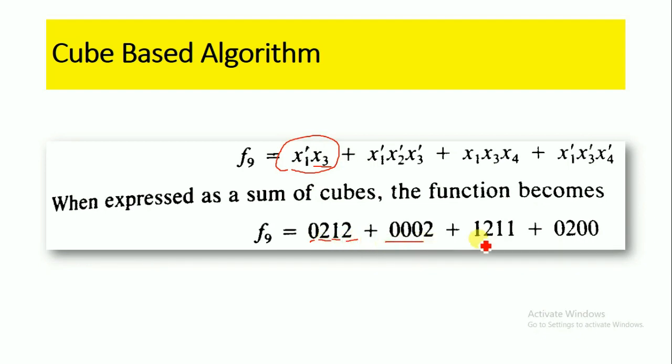After representing this function, the main goal of this cube-based algorithm is to minimize the number of cubes. We have four cubes here, and we have to minimize these to less than four cubes. Now we will directly operate on these cubes in order to reduce the number within this function f9.